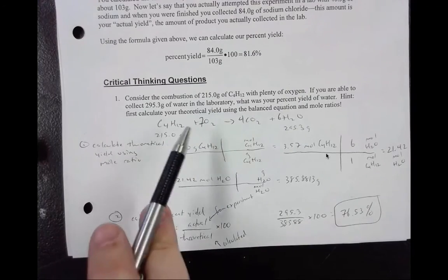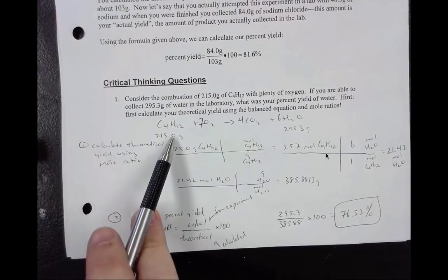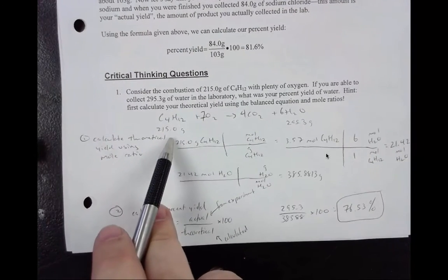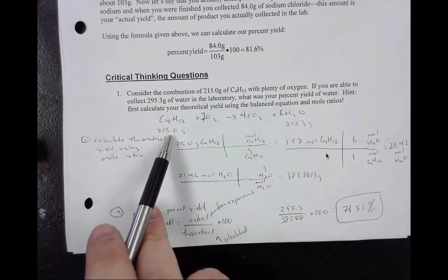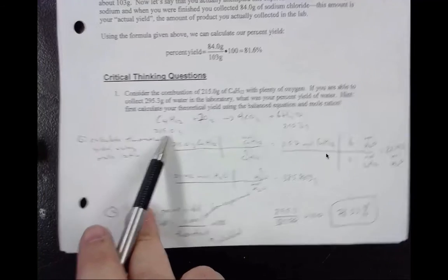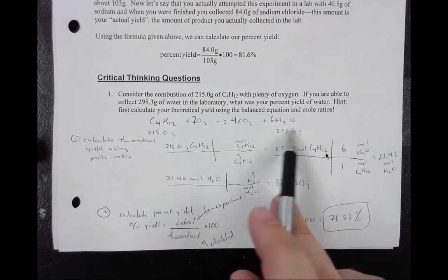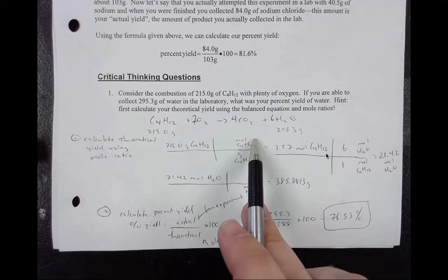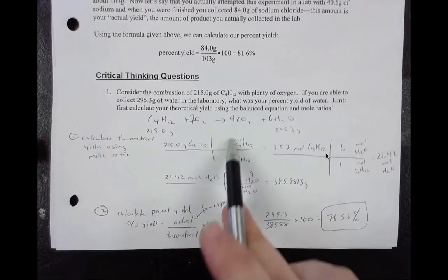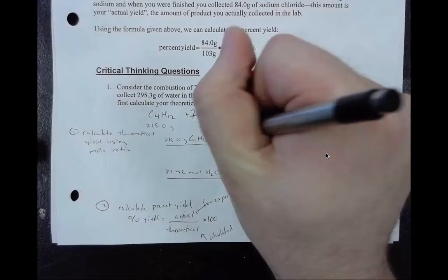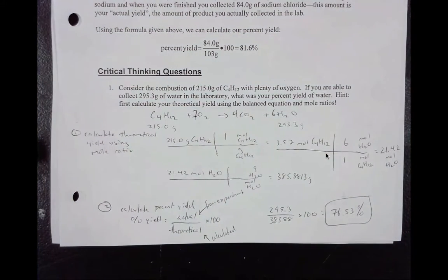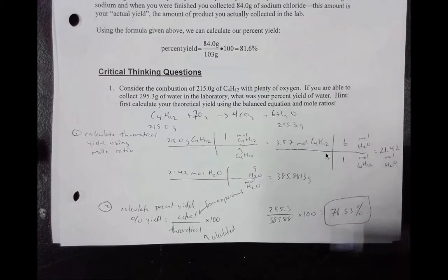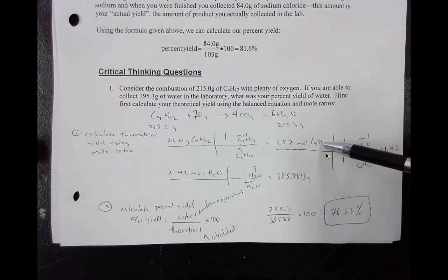We do this because we have C4H12. It gives us the mass of it. So we take that mass and we need to convert to moles. So that's what you see me do in the first T. I take the 215. If we want our grams to cancel, the one on the bottom, moles will be on top. You need to plug your values in. When you look at your periodic table it's always one mole and then you just need to find the mass. When you solve you should get 3.57 moles of C4H12.